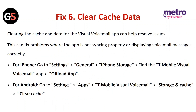Fix 6: Clear the cache data. Clearing the cache and data for the Visual Voicemail app can help resolve issues. This can fix problems where the app is not syncing properly or displaying voicemail messages correctly. For iPhone, go to Settings, then General, then iPhone Storage. Find the T-Mobile Visual Voicemail app and click on Offload App. For Android, go to Settings, then Apps, then T-Mobile Visual Voicemail, click on Storage and Cache, and click on Clear Cache.